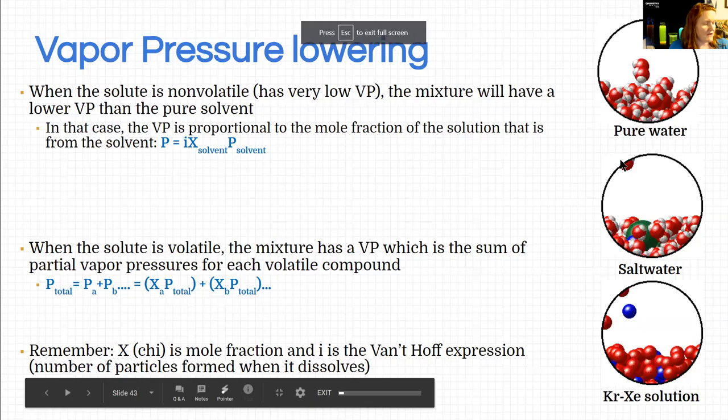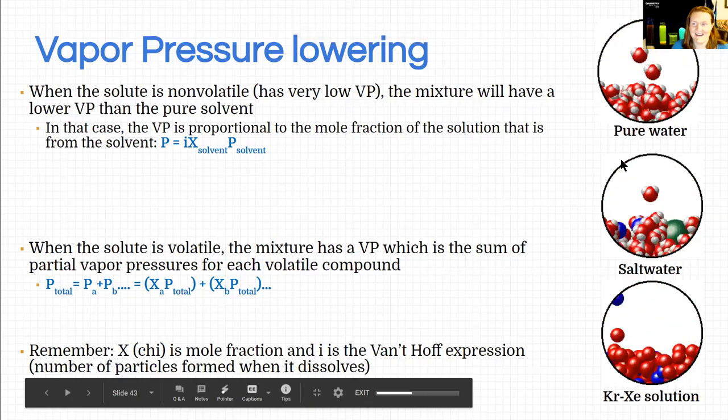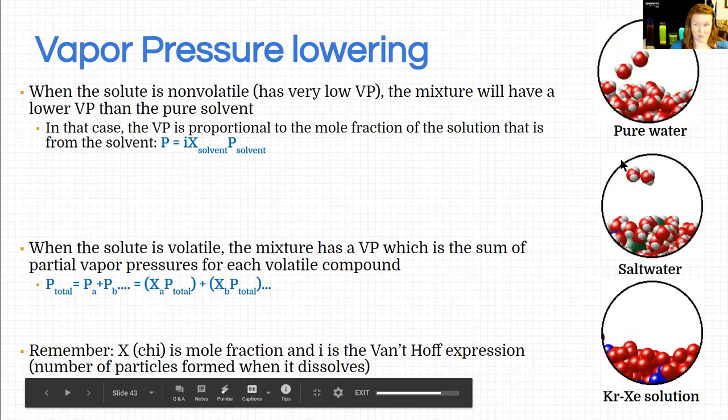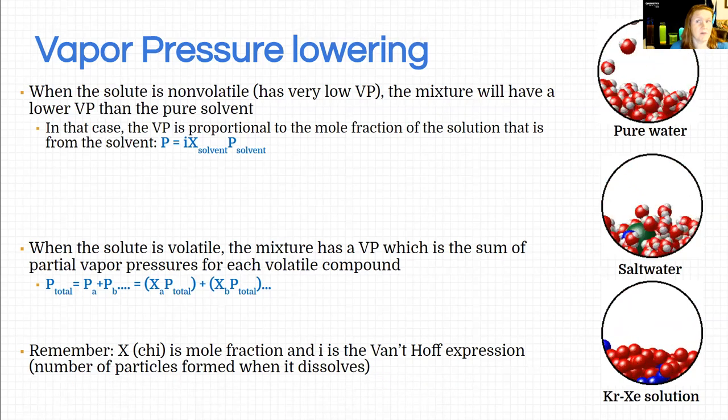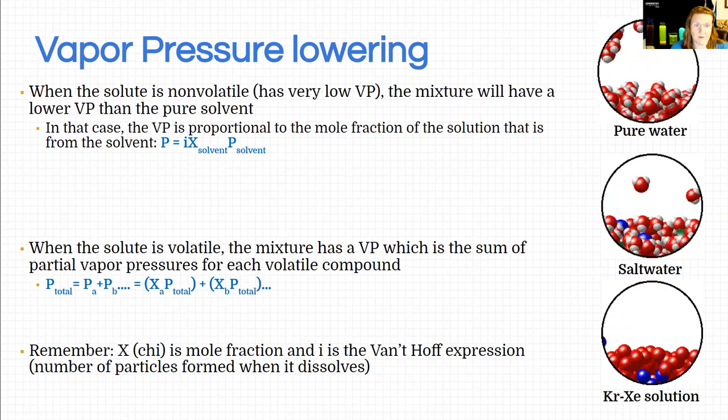Okay, so vapor pressure. I mentioned in class that you can tell when things have a high vapor pressure because they're going to stink. That's true - like acetone has a very distinct smell, gasoline also has a really distinct smell. Even things that are good smelling like perfume or baking bread have high vapor pressures - that's why you smell them.